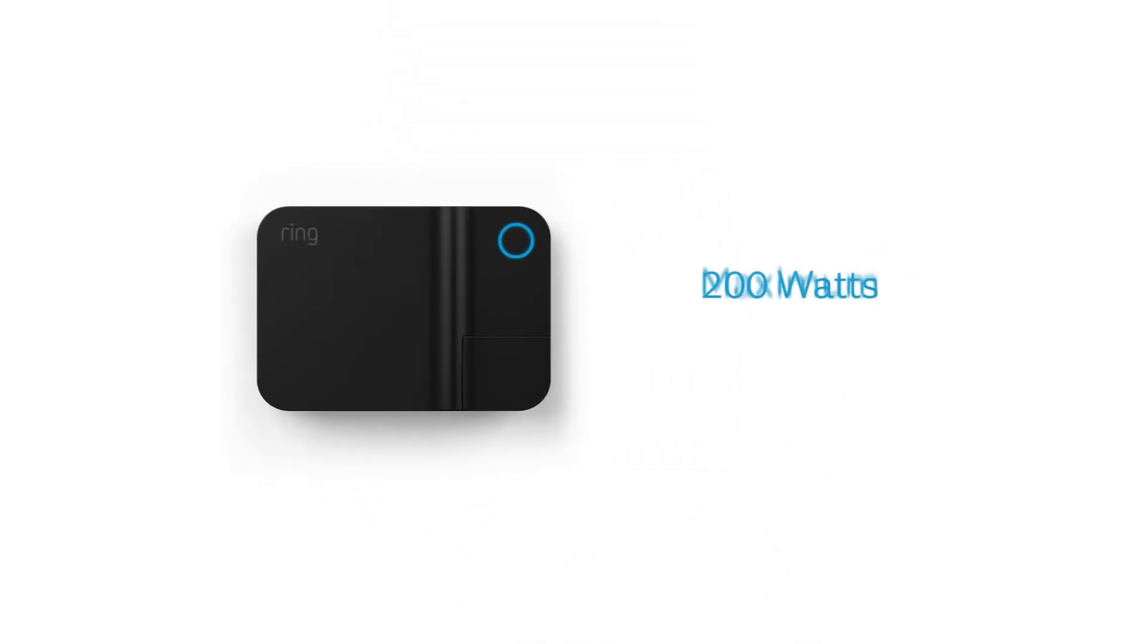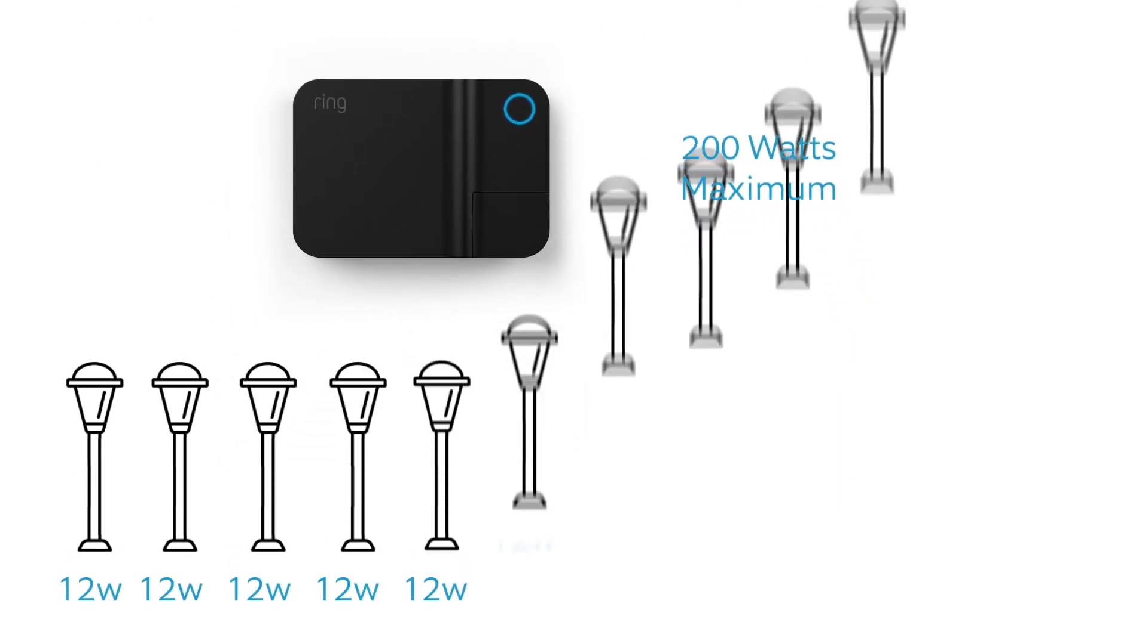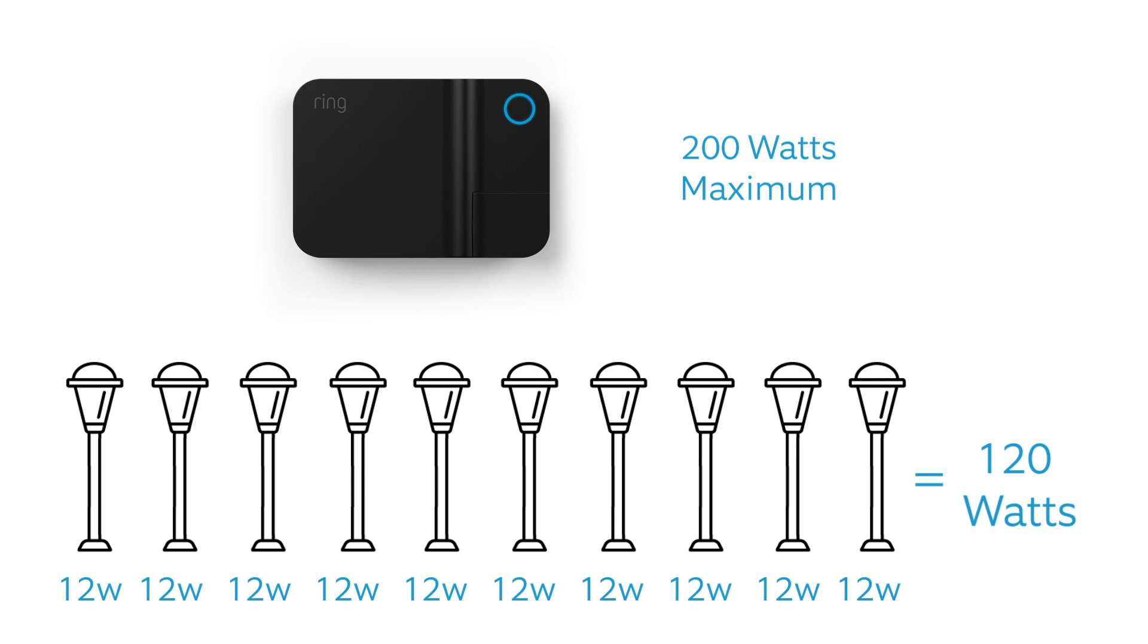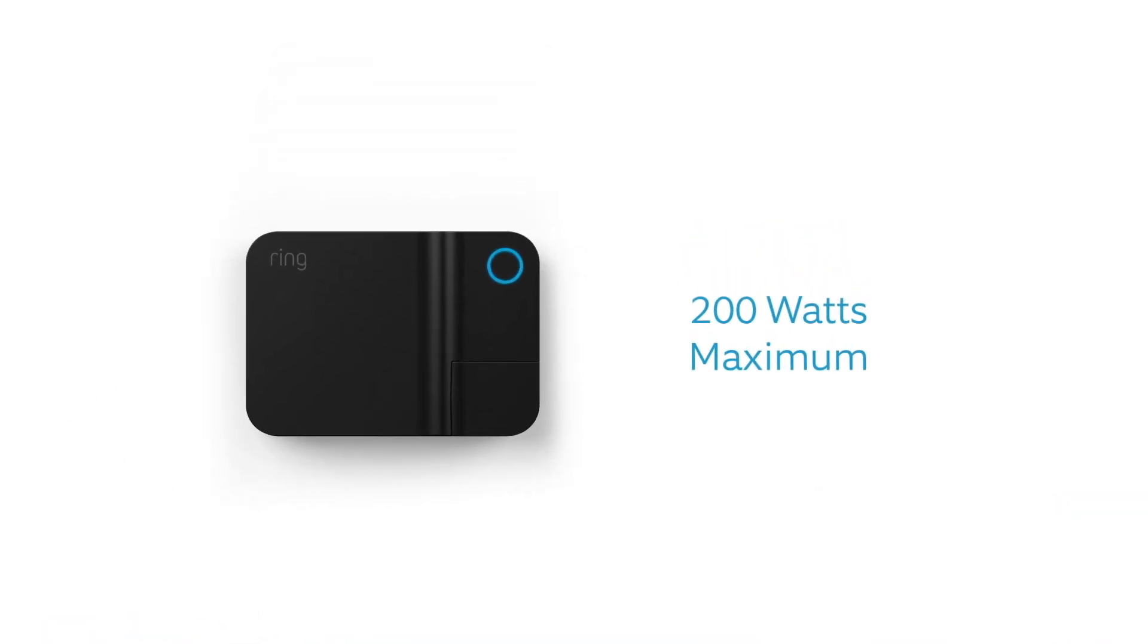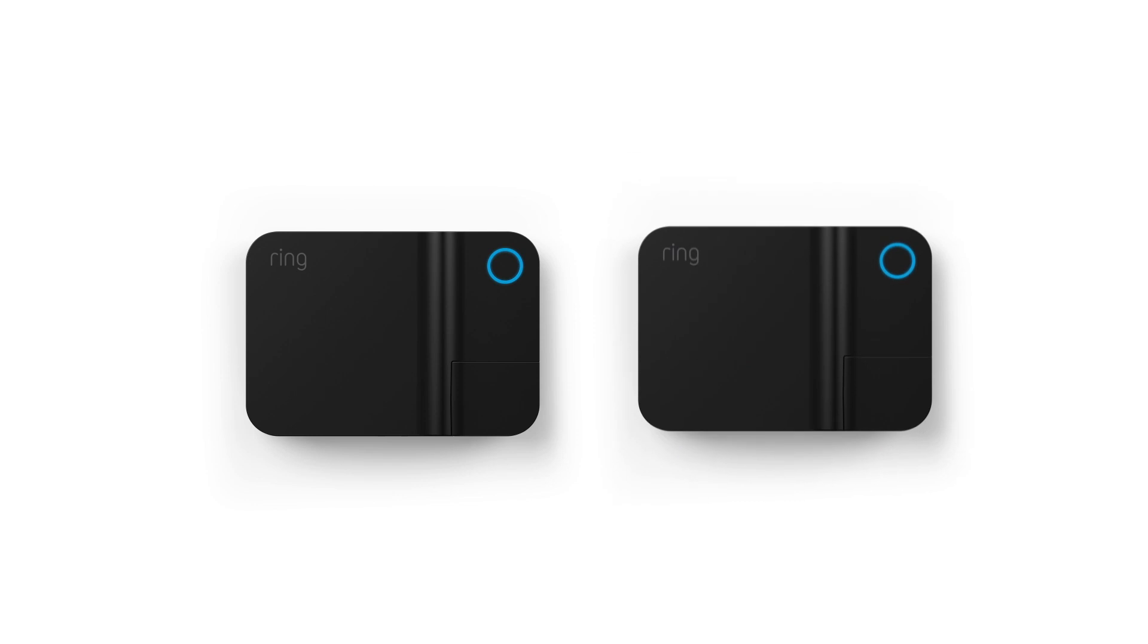Ring Transformer can supply up to 200 watts of power in total. Before you install, be sure to add up the wattage of your lights to make sure they're within this limit. Need more power or to control multiple light groups separately? Just add another ring transformer.